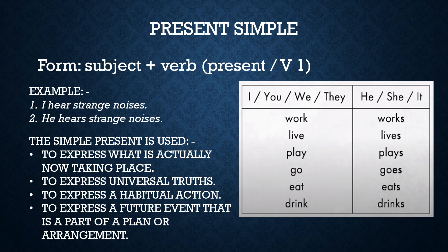The simple present is used to express what is actually taking place now — for example: 'Here comes Rohit,' 'See how it rains.' It is also used to express universal or general truths, for example: 'The earth moves around the sun,' 'The soul is immortal,' 'The sun rises in the east,' 'Fortune favors the brave,' 'The earth is round,' 'Where there is a will, there is a way.'